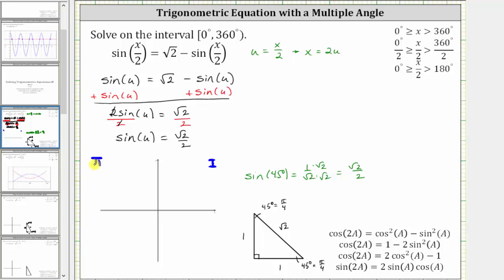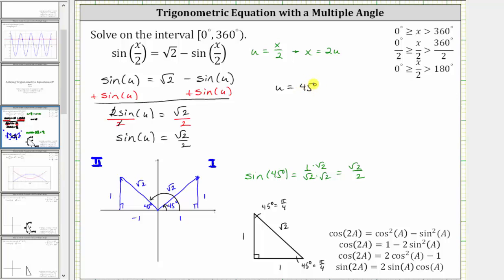We'll sketch a 45-degree reference angle in the first and second quadrants, as well as the reference triangle. Here's the 45-degree angle in the first quadrant and the corresponding reference triangle, and now the 45-degree reference angle in the second quadrant. So the solutions to sine u equals square root two divided by two are 45 degrees and 135 degrees. Since u equals x divided by two, we are only looking for angles from zero degrees to 180 degrees.